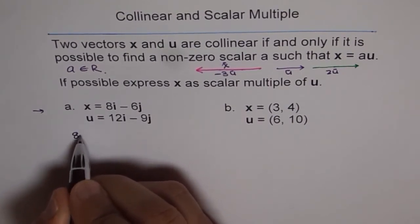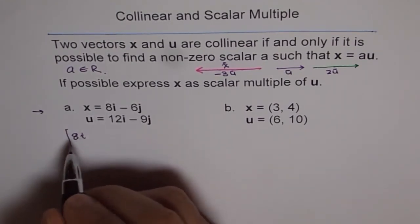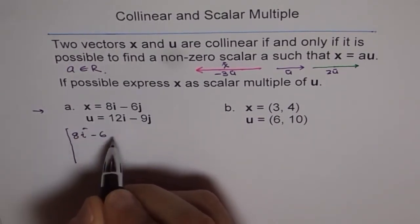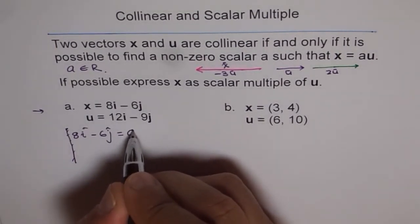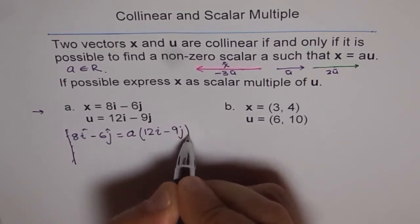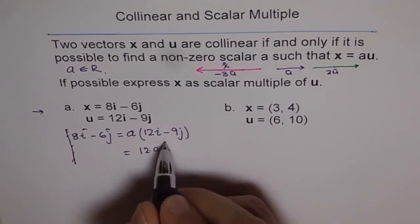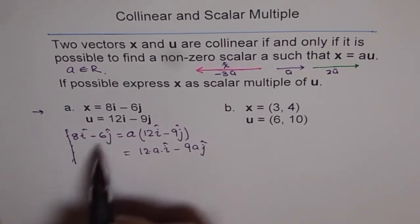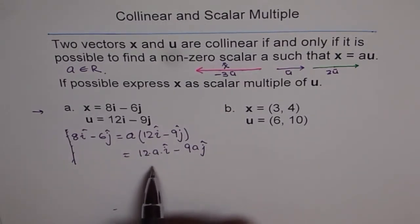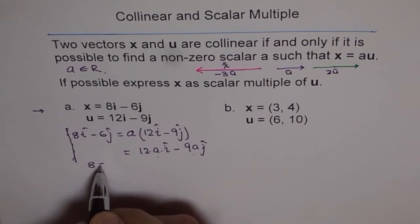Now, if these two vectors are collinear, we should be able to write one as a scalar multiple of the other. So we have 8i minus 6j equals a times 12i minus 9j. By scalar multiplication this gives 12a times i minus 9a times j, which should equal 8i minus 6j. If these two vectors are equal, their components should be exactly the same. So we get the equation 8 equals 12a.